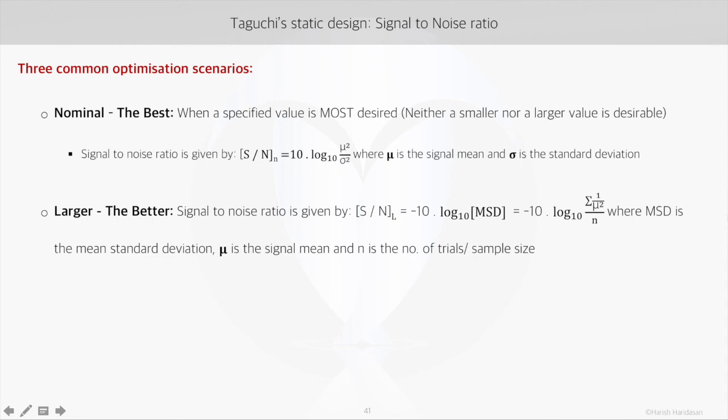In this case, the signal to noise ratio is proportional to the mean standard deviation, which is minus 10 times log10 of 1/n times the sum of 1/(mu square) terms in the experiment. Here n is the number of trials.